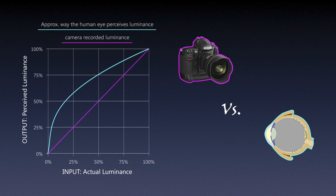Getting back to camera versus eye: the camera captures linearly — that's the purple line on the diagram — and the cyan line represents approximately how our eyes perceive luminance. The problem is that for linear capture it's straightforward: 50% input gives 50% output. But to get 50% perceived brightness for our eyes, the input luminance might only need to be around 18–22%.